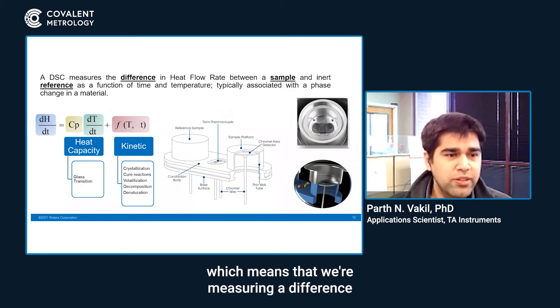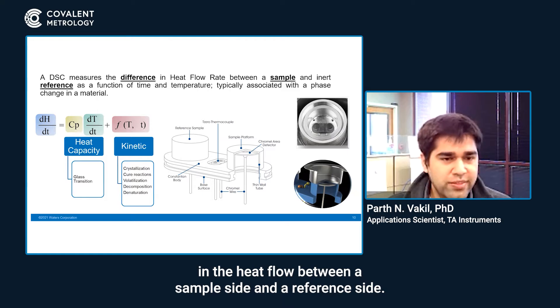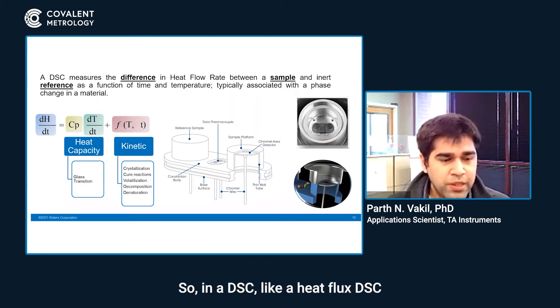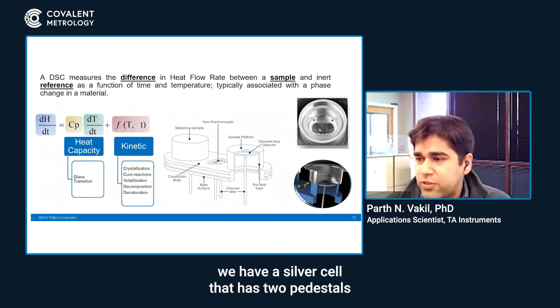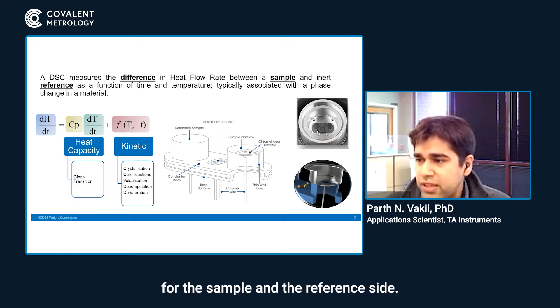which means we're measuring a difference in the heat flow between a sample site and a reference site. In a heat flux DSC, we have a silver cell that has two pedestals for the sample and the reference site.